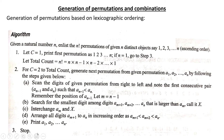Let total count equal n factorial, which is n × (n−1) × (n−2) × ... × 1. For C equals 2 to total count, generate the next permutation from the given permutation a1, a2, and so on, by following the steps given below.